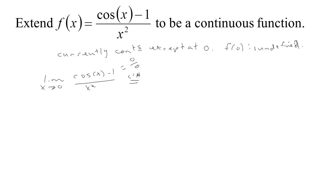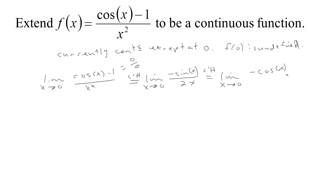Since it has that form we can apply L'Hôpital's rule and trade this in for the limit as x tends to zero of the derivative of the numerator, which is negative sine x, over the derivative of the denominator, which is 2x. Again that has the form zero over zero so we apply L'Hôpital's again and trade that in for the limit as x tends to zero of negative cosine x over two, which is negative one half. So it does have a limit at zero, and we just want to set it up so our function is defined to be negative one half at zero.